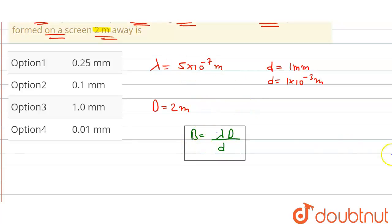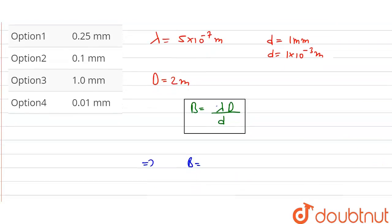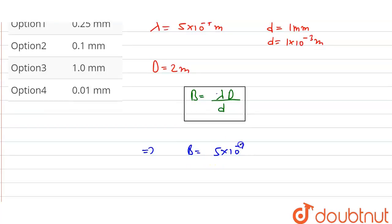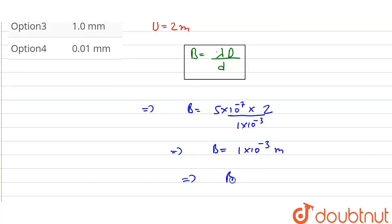Putting all values into the equation: B = (5 × 10⁻⁷ × 2) / (1 × 10⁻³). Simplifying this, B = 1 × 10⁻³ meter. Since the options are given in millimeters, B = 1 millimeter. This is our required answer.